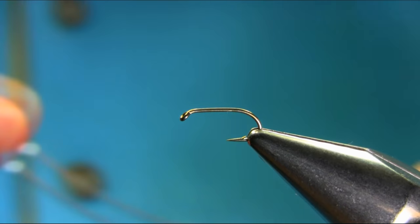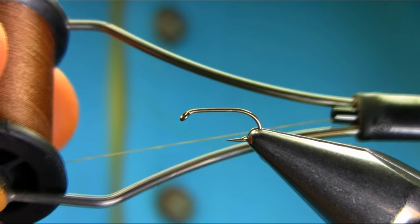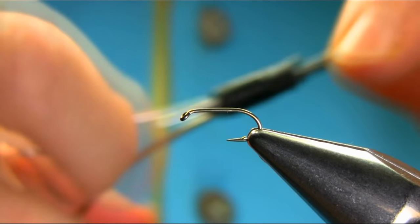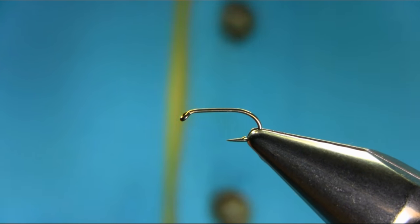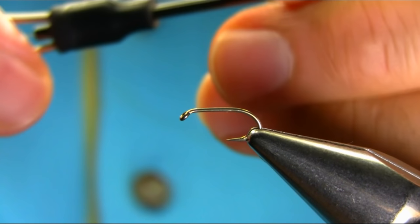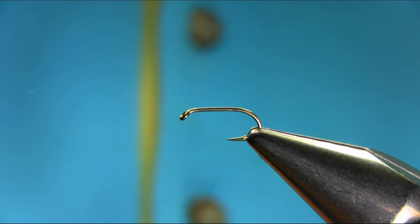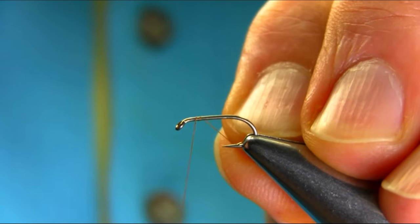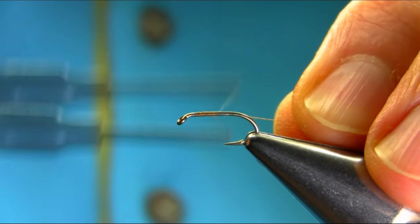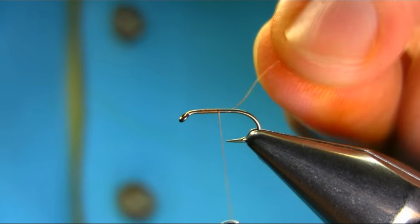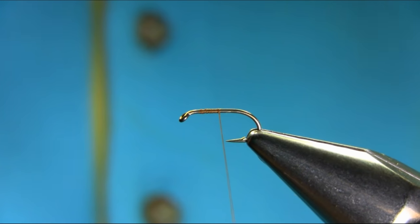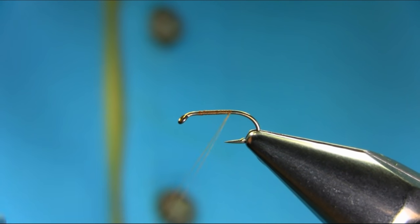So the thread I'm using is a camel color 8-0. Just start below the eye. Now the hook I'm using is size 14 light wire straight shank hook. All the way.